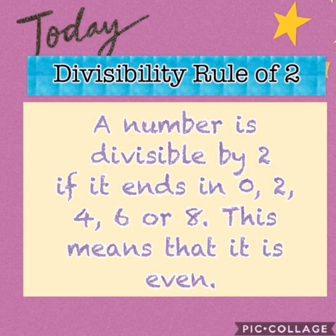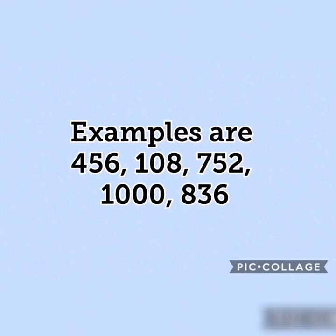Divisibility Rule of 2: A number is divisible by 2 if it ends in 0, 2, 4, 6, or 8. This means that it is even. Examples of numbers that are divisible by 2 are 456, 108, 752, 1000, and 836. If you will notice, they end in even numbers — 2, 4, 6, 8, and 0.